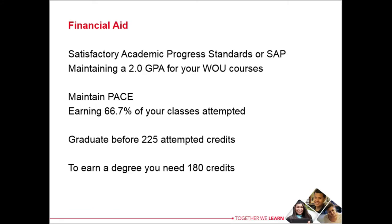Students who are receiving federal financial aid will need to maintain Satisfactory Academic Progress Standards, or SAP, maintaining at least a 2.0 GPA of all your WOU courses. You will also need to maintain PACE, which is earning 66.7% of your classes attempted in order to graduate before the max time frame. The max time frame is 225 attempted credits, and to earn a degree you will need 180 credits.